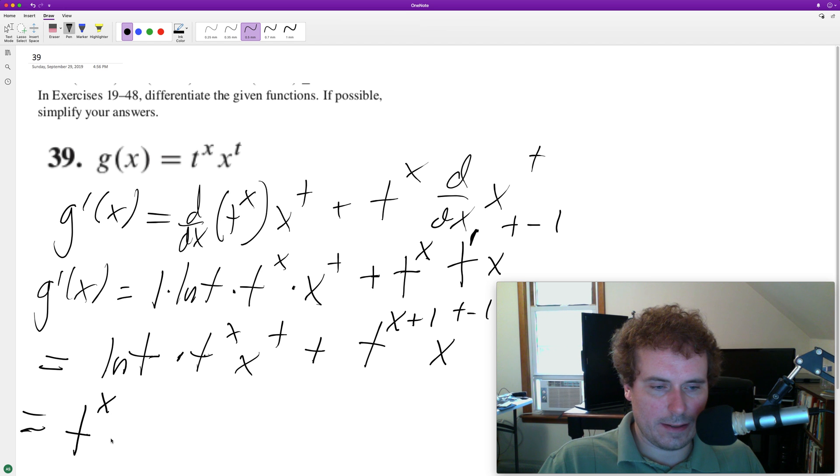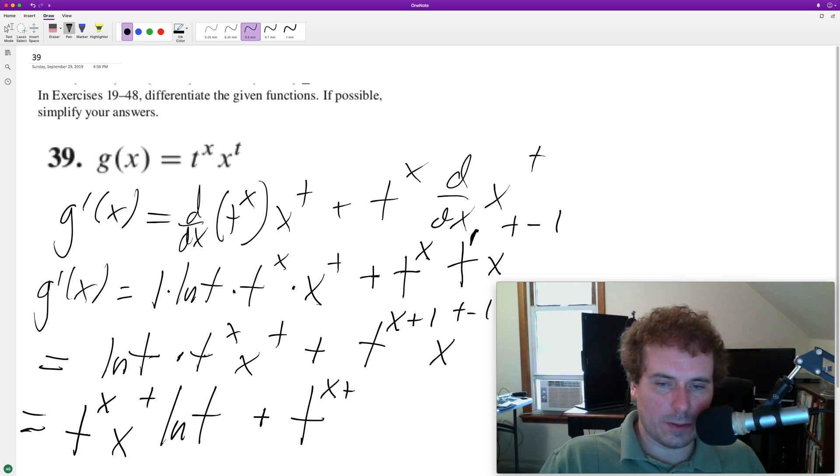T raised to the x, x raised to the t, natural log of t, plus t raised to the x plus one, times x raised to the t minus one. And that's it.